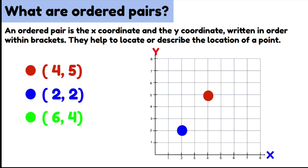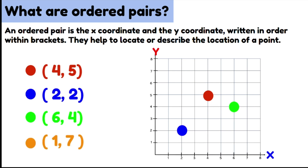Next, 6, 4 — so 6 on the x-axis and 4 on the y-axis. The point where they meet is where we put our location. Last one: 1 and 7, so 1 on the x-axis and 7 on the y-axis. The point where they meet, we put our location. And that's how we find ordered pairs on a coordinate plane or coordinate grid.